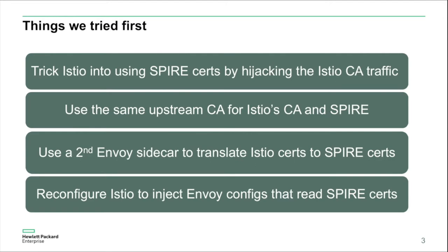Next, we tried using the same upstream CA both for Istio and for Spire. This gets you some level of compatibility because then you can have some outside services that use Spire certificates and some inside services that use Istio certificates. And then because they're both SPIFFE certificates, they have some level of compatibility with each other. But you still don't get all the advanced Spire features like attestation and the workload API.